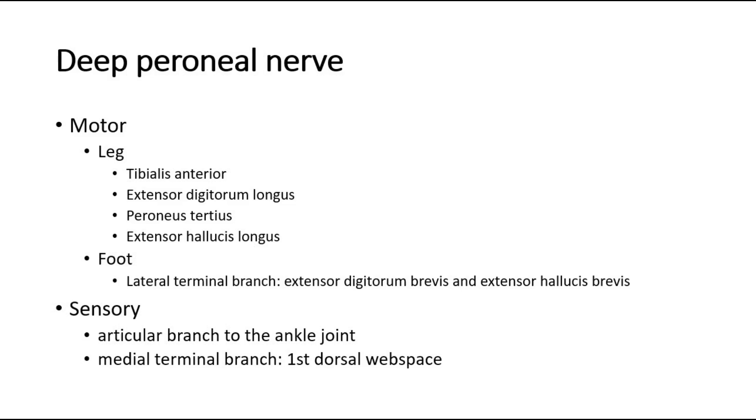For sensory, it innervates the articular branch to the ankle joint, and its medial terminal branch innervates the first dorsal web space.